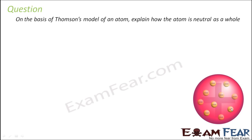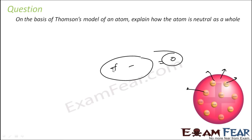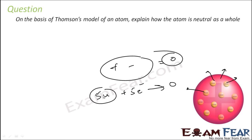On the basis of Thomson's model, we can explain how the atom is neutral as a whole. There is a positive charge and a similar amount of negative charge from the electrons, so overall positive and negative gives a neutral charge. For example, if it has 5 units of positive charge, then it will have 5 electrons, so overall it will be neutral. This is how Thomson's model explains the neutrality of the atom.